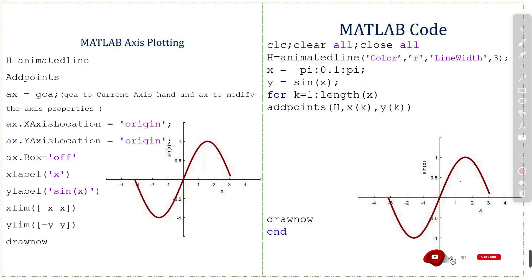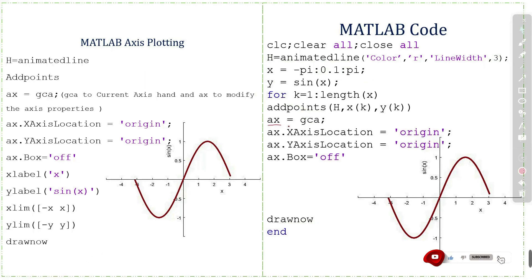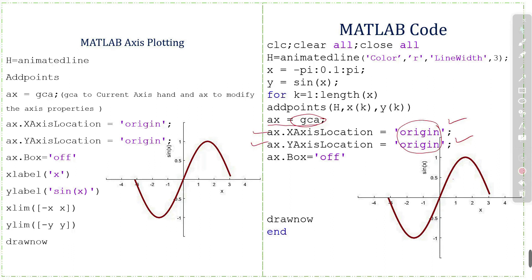If you want to control the axis, we use ax = gca to get the current axis handle. We use the axis location commands — both x-axis and y-axis are set to origin. We can also use 'top' or 'bottom' for the x-axis and 'left' or 'right' for the y-axis. We also use ax.box = off to remove the axis box.